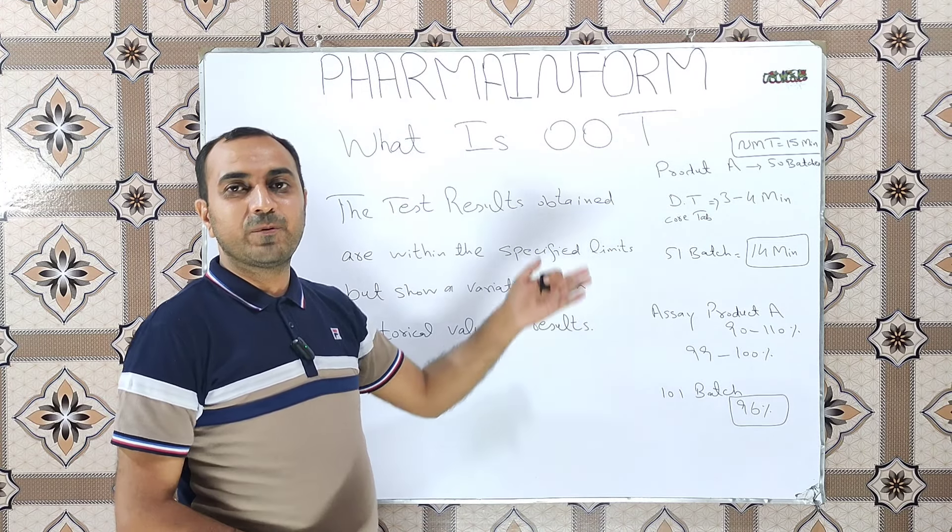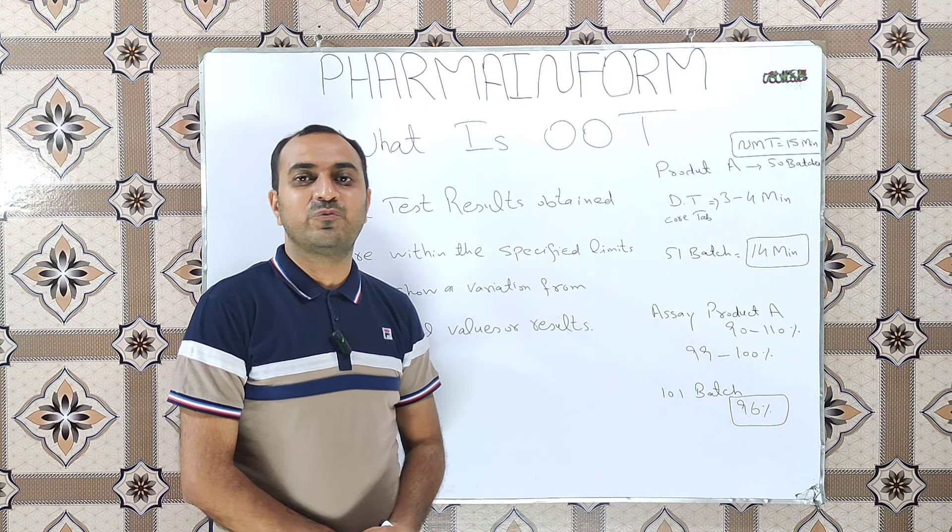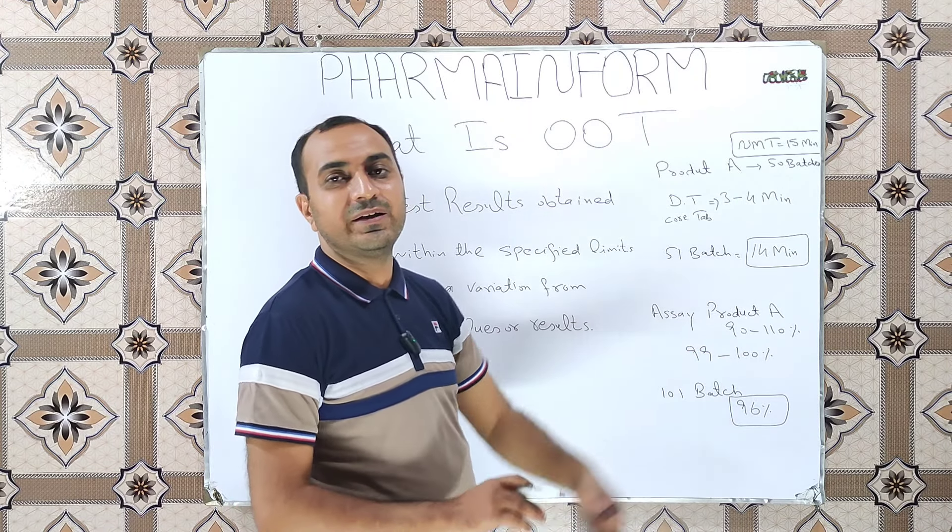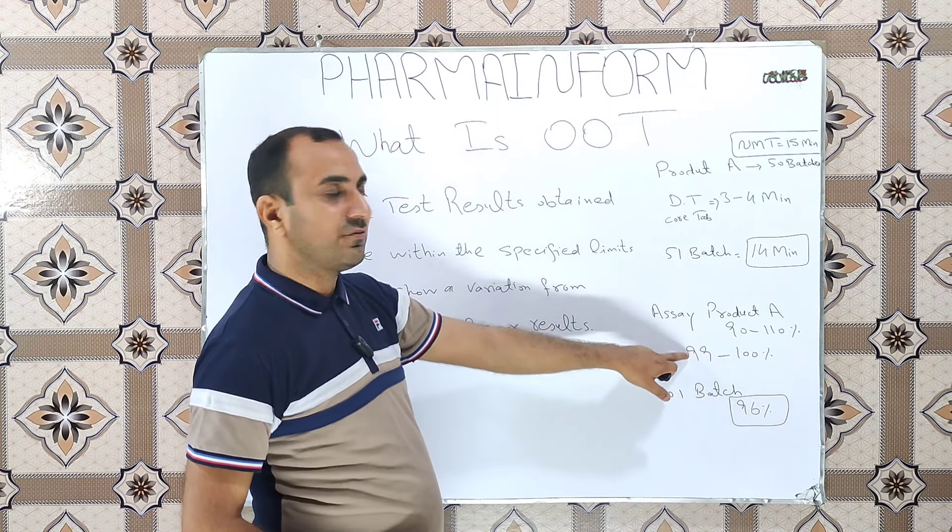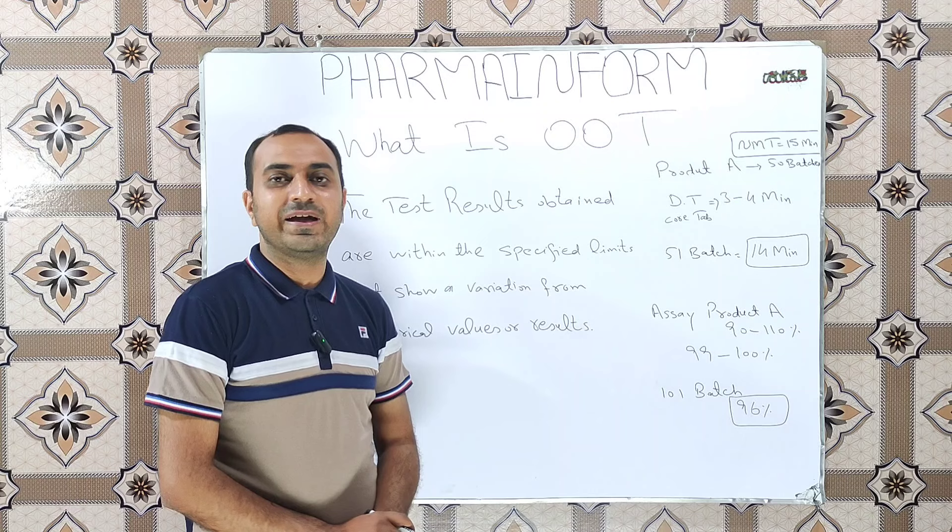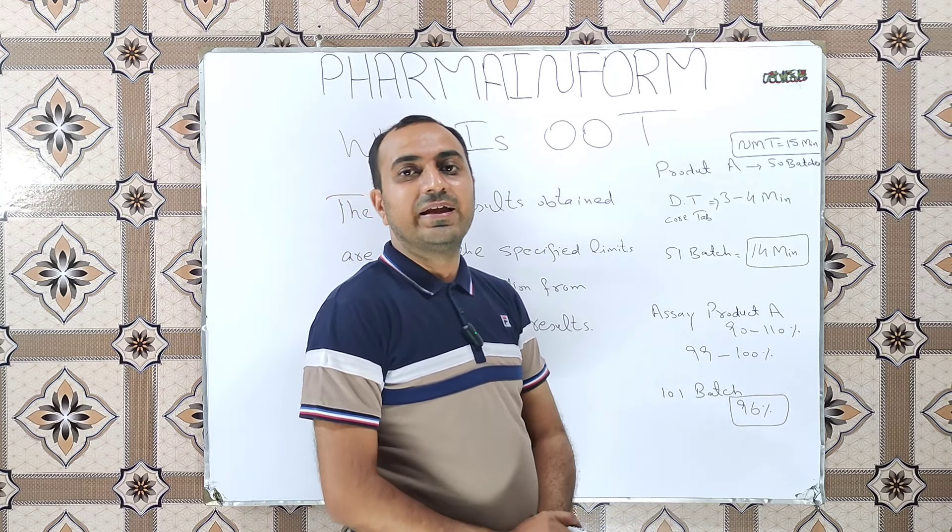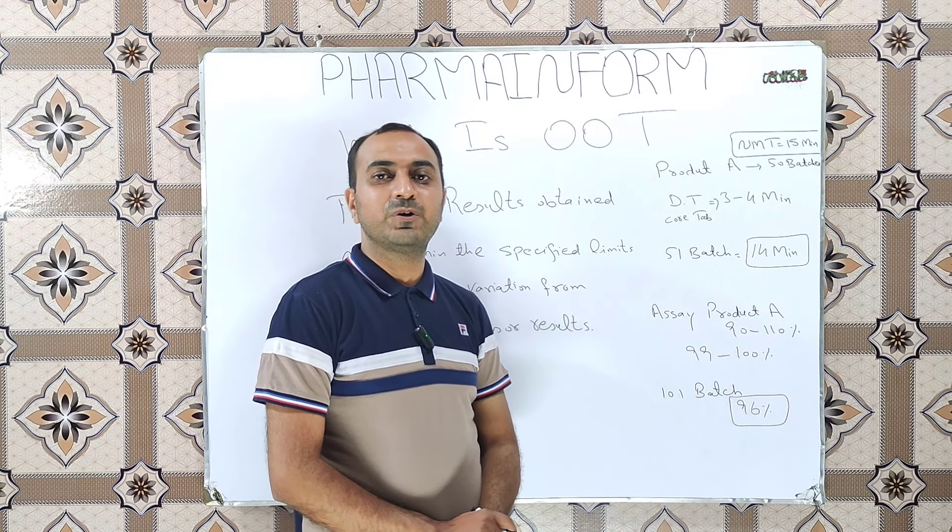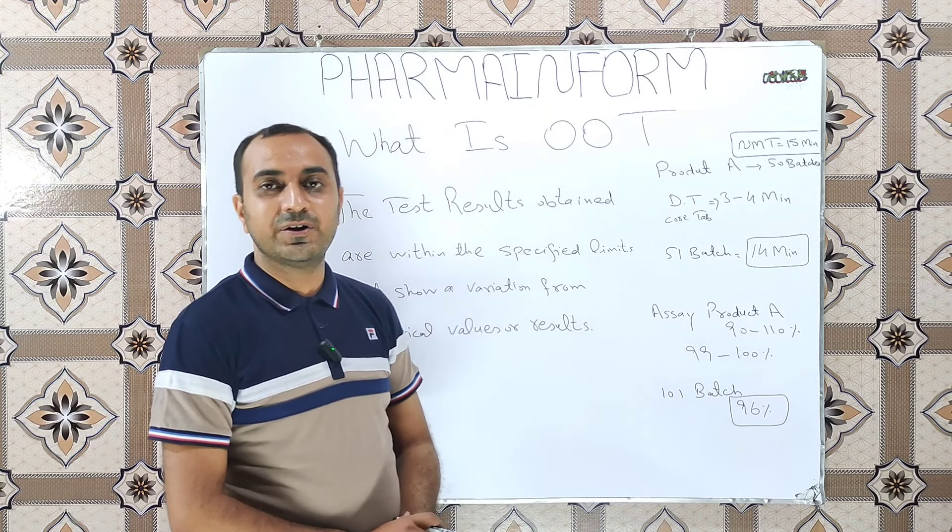Next, we will take the example of a product A for its SA value. Suppose we have a product A and we have manufactured its 100 batches and SA limit for this product is 90 to 110%. All of the 100 batches results for the SA lie within 99 to 100%. But the SA result of batch number 101 shows the difference and its result was 96%. Even though it was within the limit 90 to 110%, it differs from the previous historical data of the 100 batches.